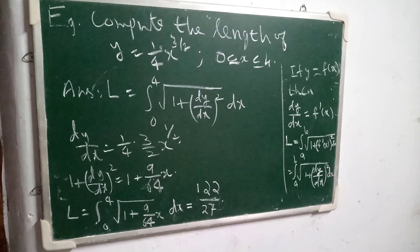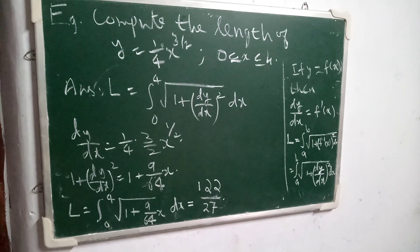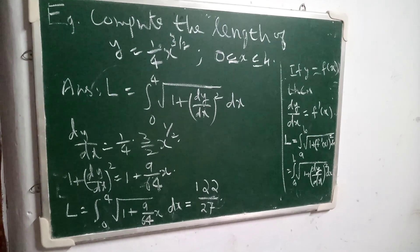Now, for the given curve, compute dy by dx. It is 1 by 4 into 3 by 2 x to the power 1 by 2.